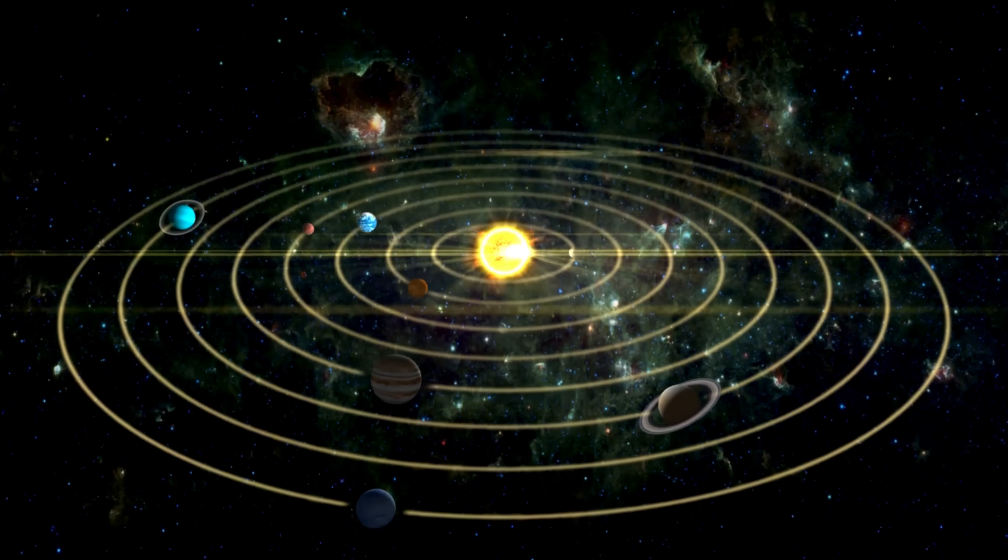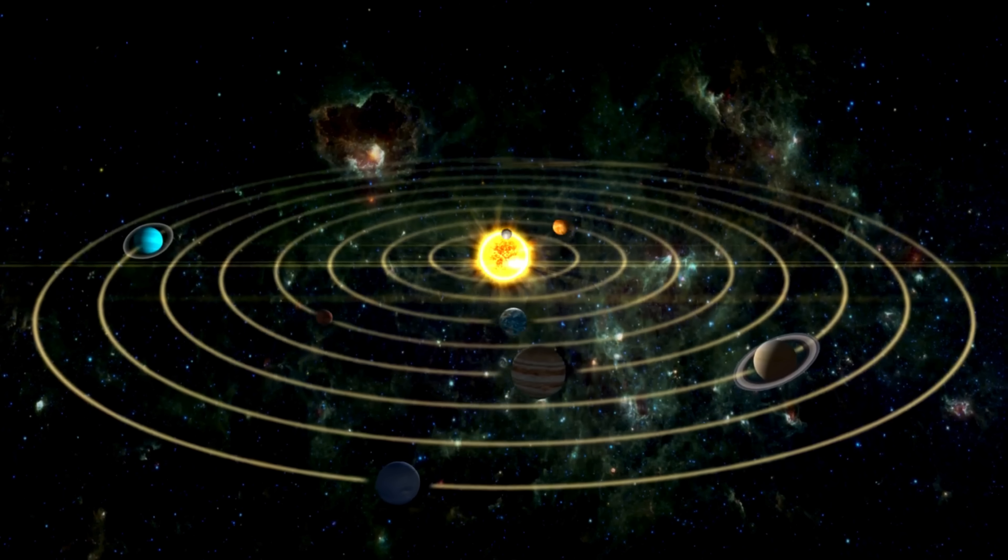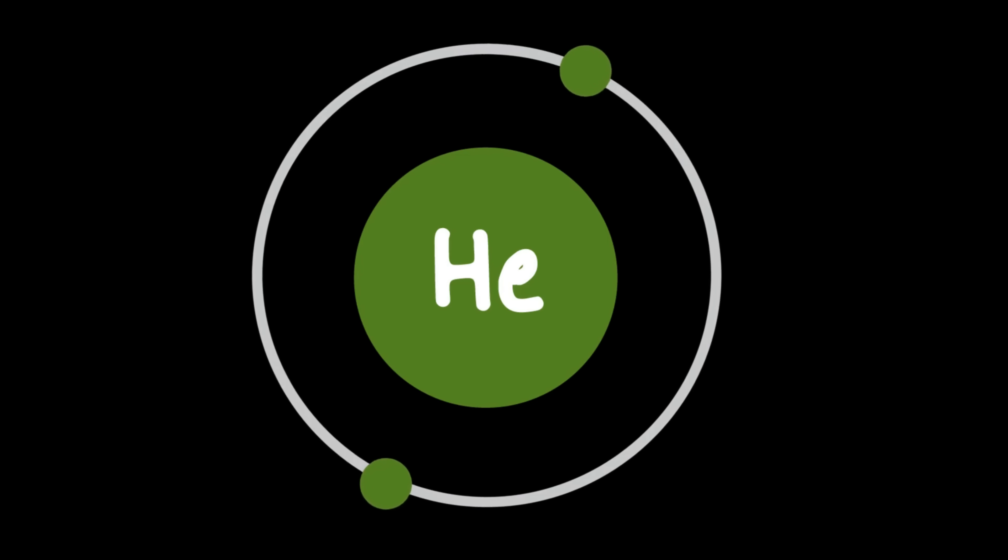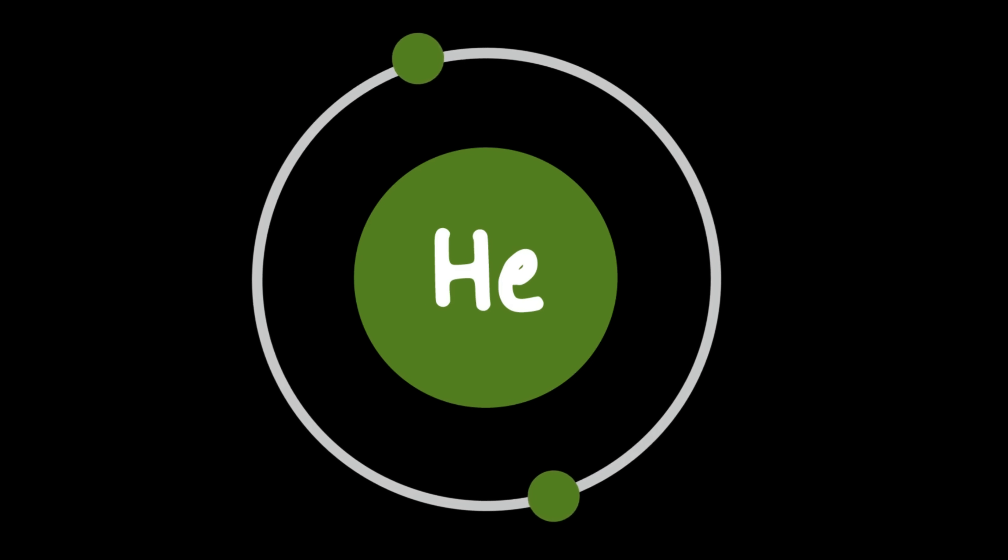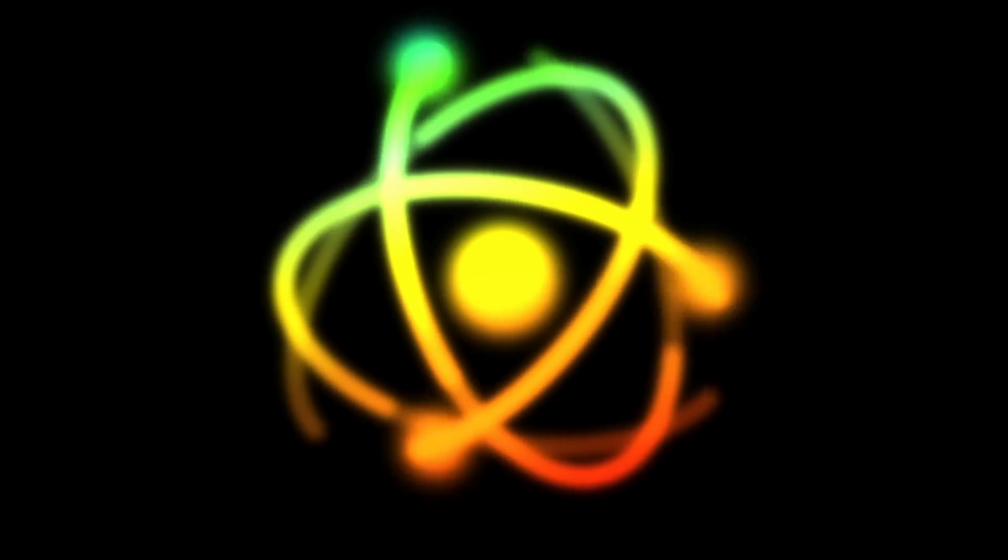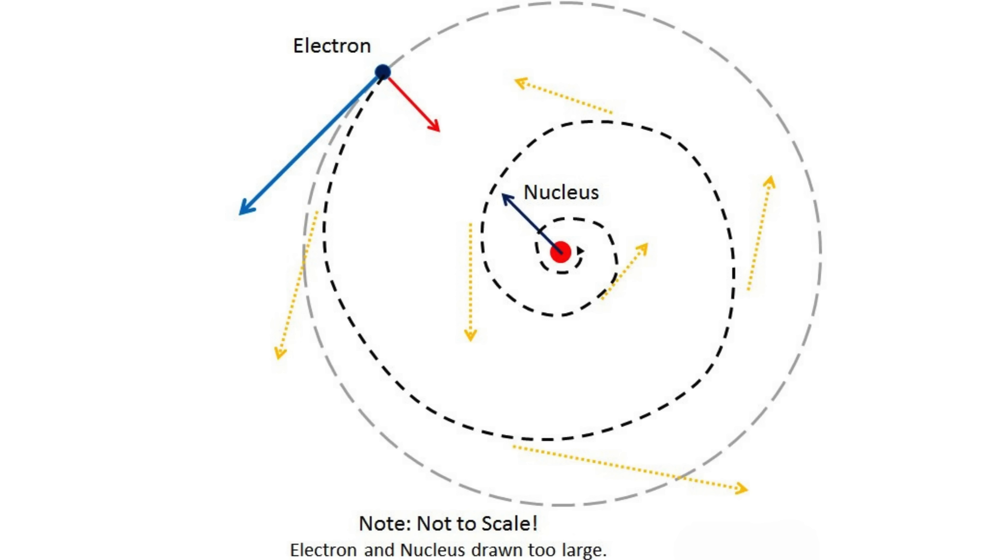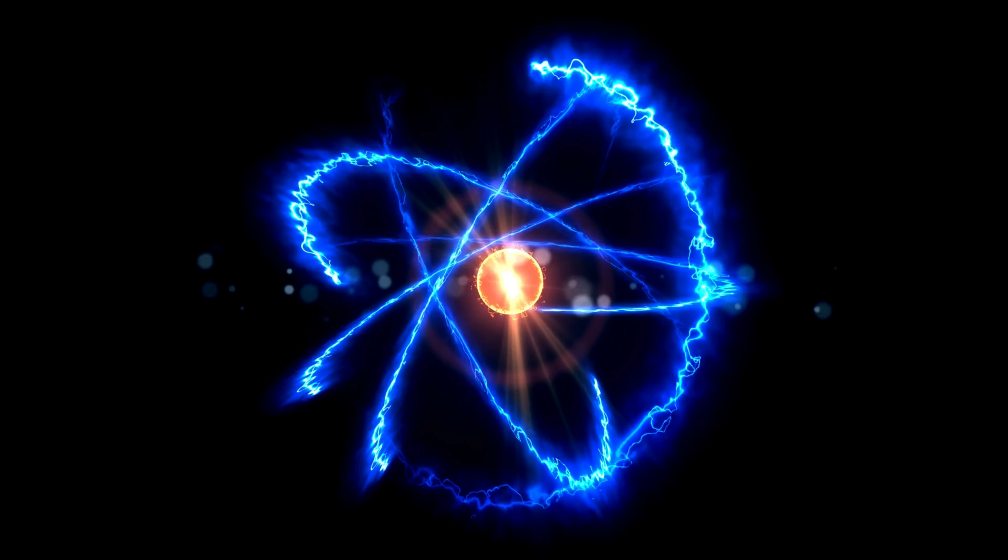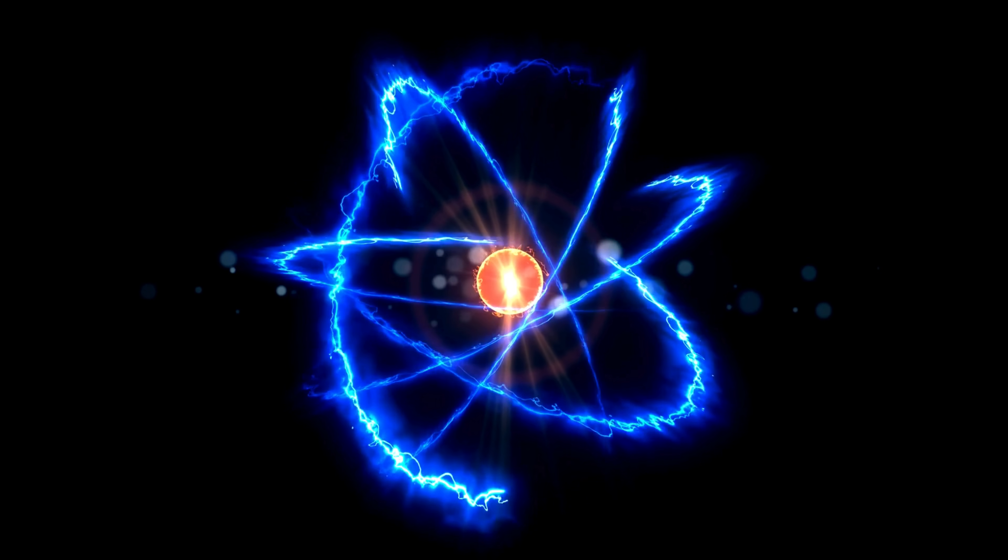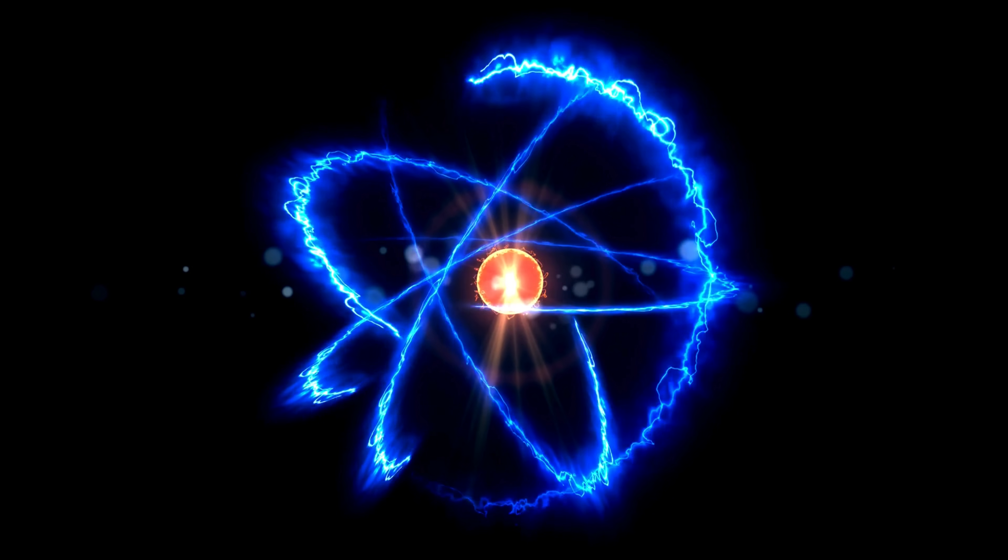What kind of flaw? Rutherford's model suggested that electrons orbit the nucleus like planets around the sun. However, according to classical electromagnetism, a charged particle moving in a circular orbit, like an electron, should constantly emit electromagnetic radiation. As it radiates energy, it should lose momentum and spiral inward, collapsing into the nucleus in less than a millionth of a second. This posed a fundamental problem. If this were true, atoms couldn't exist as stable structures. Yet, clearly, they do.